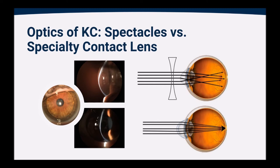When we use a specialty contact lens, such as a scleral lens, an RGP, a hard lens, a hybrid lens, or a specialty soft lens for keratoconics, what it does is it functionally replaces the front surface of the cornea, giving us a nice smooth surface. And what that does is it brings those focal points back together to give us that single crisp focus back that we were once missing.